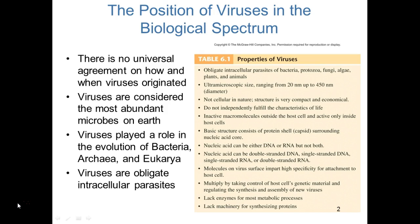We call viruses obligate intracellular parasites. This means they are required to replicate inside of a living organism — they don't have a reproduction system of their own. They have no metabolism, they are much smaller than any living organism, and they are not cellular. They have only DNA or RNA, never both. The nucleic acids can be double-stranded or single-stranded. They multiply by taking control of the host genetic machinery, then regulate the synthesis and assembly of new viruses. They lack enzymes for metabolic processes and steal the necessary components for replication from the host cell.